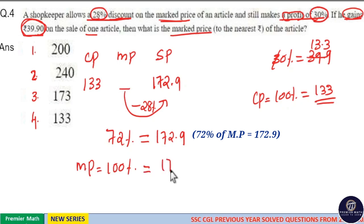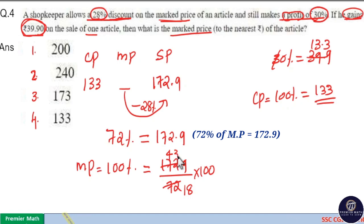Which is equal to 172.9 divided by 72 times 100. Now if I divide it with 4, 4 goes 18 times, 4 goes 4 times in 16 remaining, 4 goes 3 times in 12 remaining 2. If I divide 43 with 18...